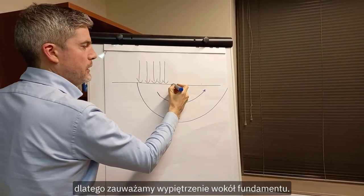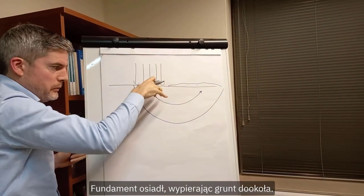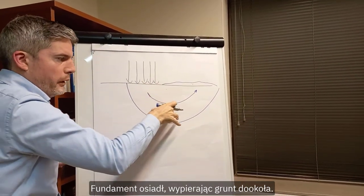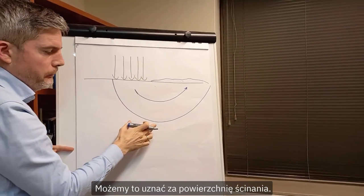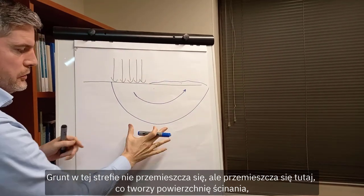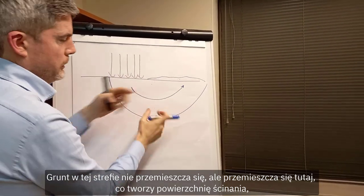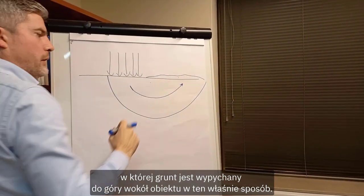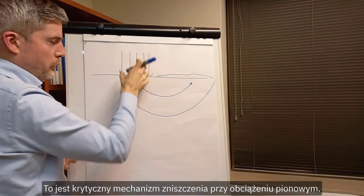That's why we started to see the heave around the foundation — as the foundation went down, it pushed the soil all the way around. We can consider this as a shear plane: the soil outside is not moving, but the soil inside is moving, creating a shear plane where that soil is pushed all the way around and up. That is the critical failure mode under vertical load.